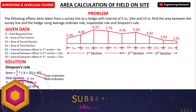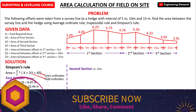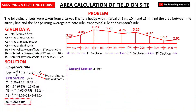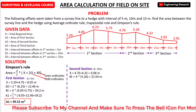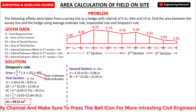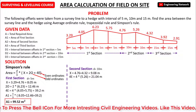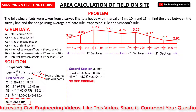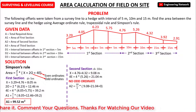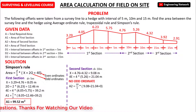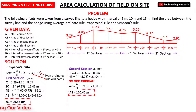Similarly, for the second section, X equals 4.76 + 4.32 = 9.08m. 4E equals 4 into 5.26 = 21.04m, and there is no odd ordinate in the second section. So the area in the second section equals (10/3) into (9.08 + 21.04), giving 100.40 square meters.